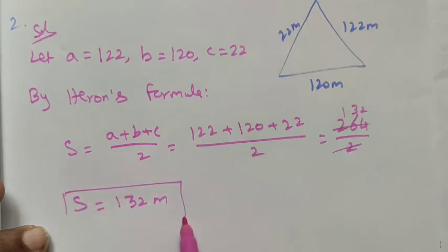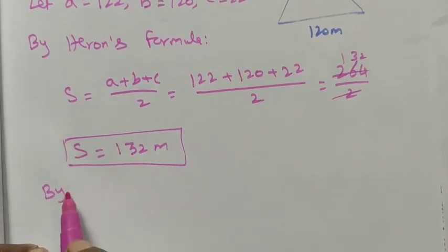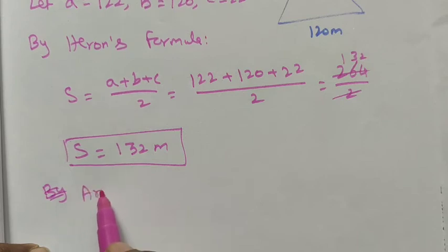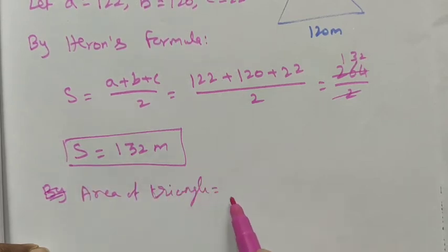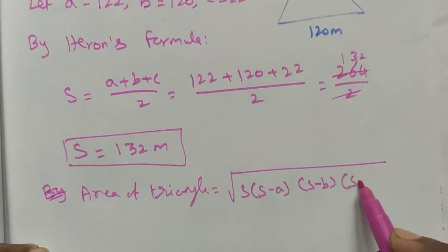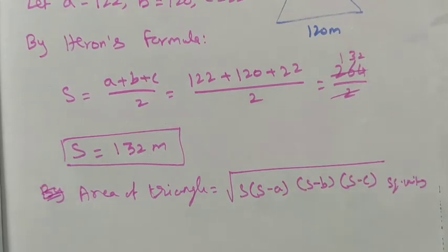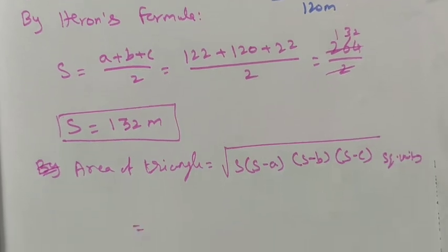Area of triangle by Heron's formula: We know the formula, that is square root of S into S minus A, S minus B, and S minus C, square units. Now apply the values.